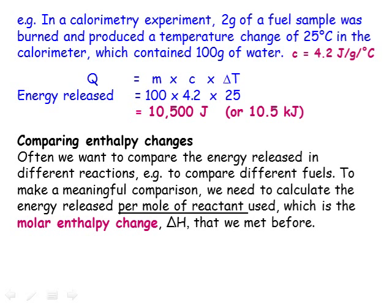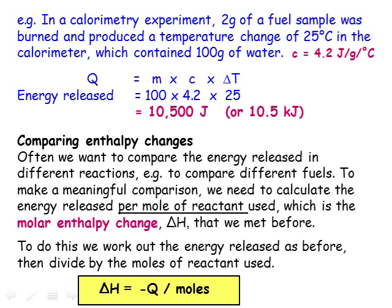A better comparison would be to work out how much energy is released per mole of fuel — this is the molar enthalpy change, delta H, that we have previously seen how to calculate using average bond energies. To work out the molar enthalpy change, we divide the energy change Q by the number of moles that reacted. We also need to change the sign, because an increase in temperature in an exothermic reaction corresponds to a negative value of delta H. If you know the mass of fuel that reacted, it isn't too difficult to convert that to moles by dividing by the relative formula mass.